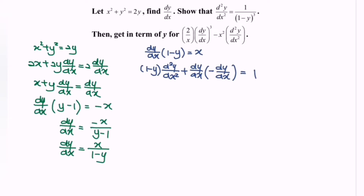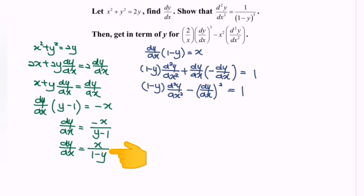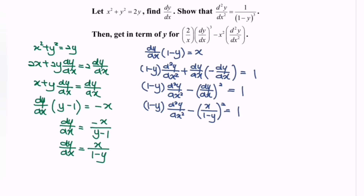Applying the product rule: (1 minus y) times the second derivative, plus dy/dx times the derivative of (1 minus y) which gives negative dy/dx, equals 1 — from differentiating x. Rewriting the situation: (1 minus y) times the second derivative minus (dy/dx) squared equals 1. We now rearrange to isolate the second derivative, multiplying through by (1 minus y).